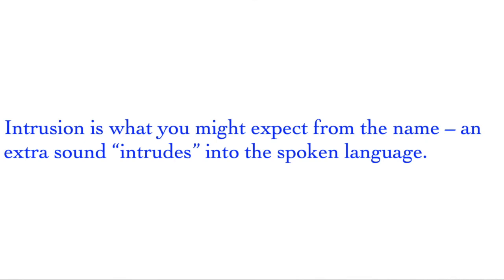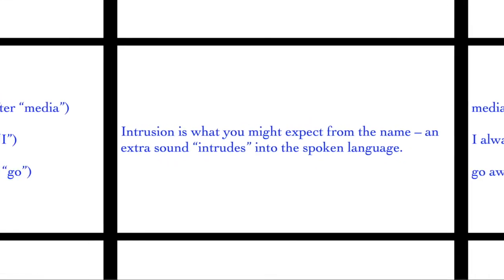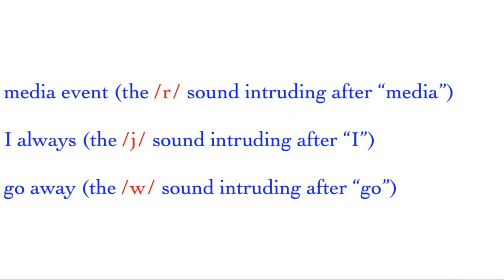Intrusion. Intrusion is what you might expect from the name - an extra sound intrudes into the spoken language. Now, 'media event' is never just 'media event', it is 'media-r-event'. There is an R intruding. 'I always' - it's not 'I always', it is 'I-j-always'. So there is a /j/ sound after 'I'. And 'go away' is not just 'go away', it is 'go-w-away'. So there is a /w/ sound after 'go'.